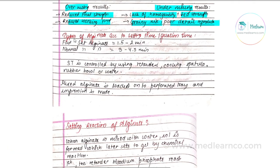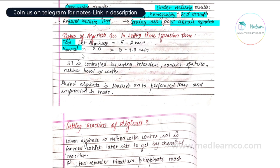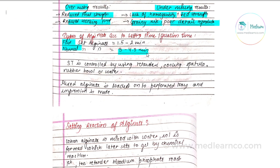Types of alginate according to setting/gelation time: fast-set alginate has a setting time of 1.5 to 2 minutes; normal-set alginate has a setting time of 3 to 4.5 minutes.